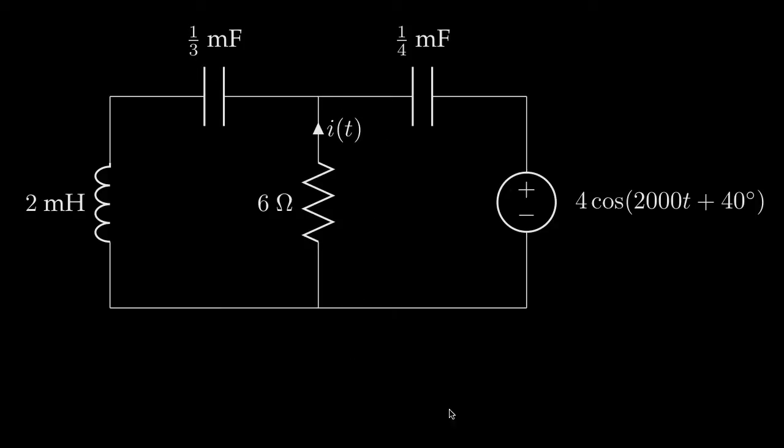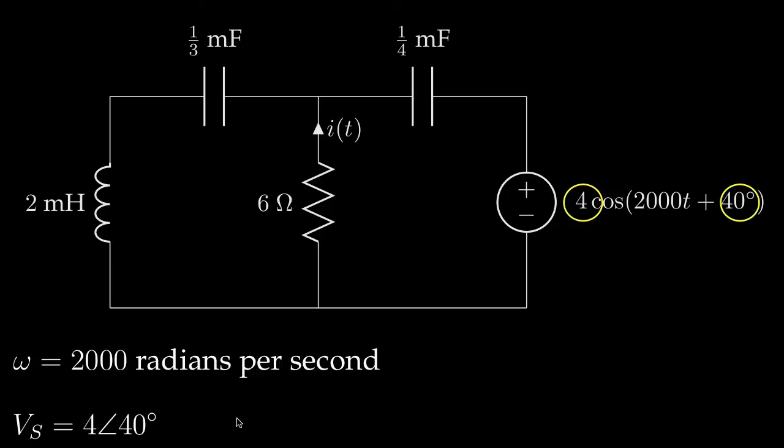For our analysis of this circuit, we'd like to determine the current flowing upward through the resistor. Now, to convert this circuit to a phasor voltage and complex valued impedances, we'll first note that the frequency for the sinusoidal source is 2,000 radians per second. Once we note that, the next thing we'll do is specify the phasor voltage as a complex value with an amplitude of 4 and a phase equal to 40 degrees.